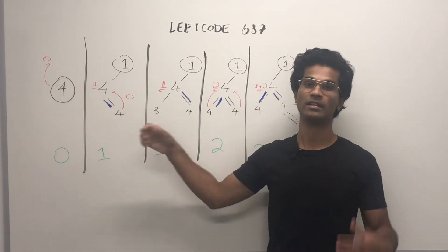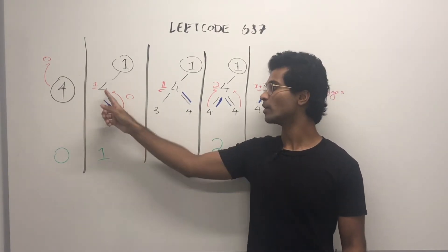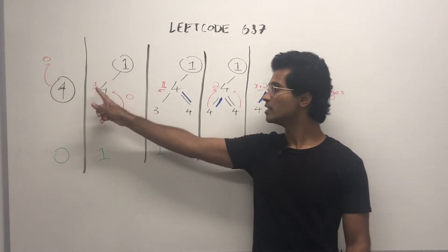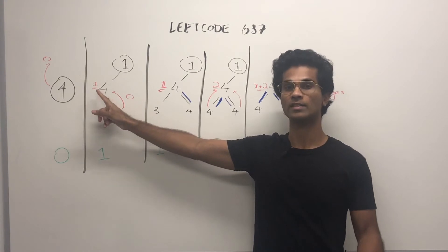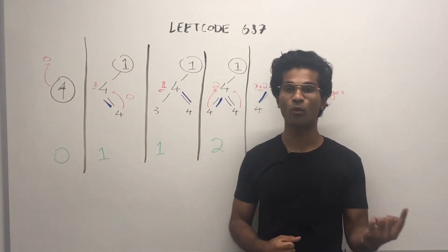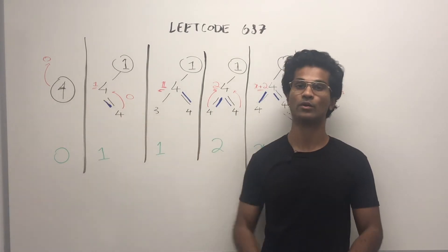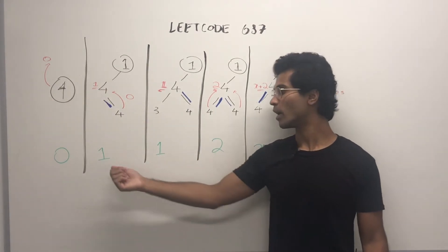This 4 is a leaf node so it's going to tell its parent my longest univalue path is 0. This parent is going to see that its right child is the same so it's going to add 1 to whatever value that this node gave to its parent. So it's going to be 0 plus 1. We have an output of 1.